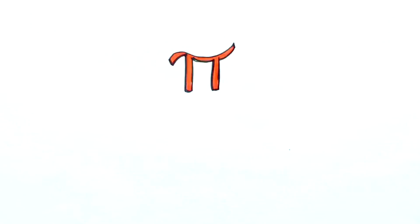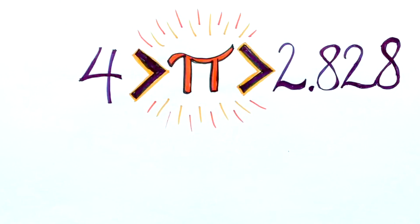In this case, we know that pi is less than 4 but greater than 2.828.